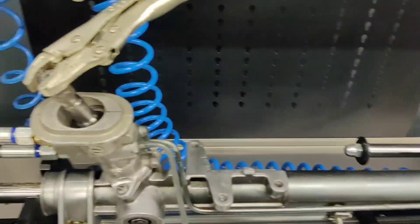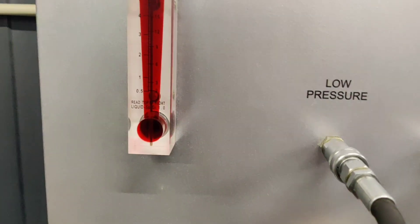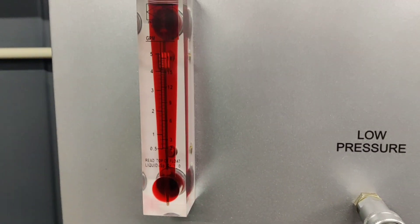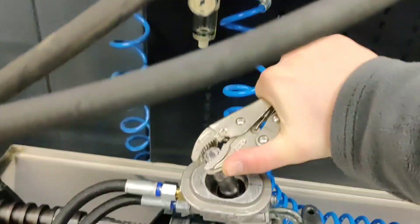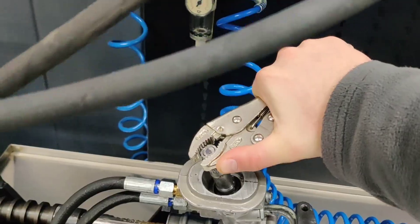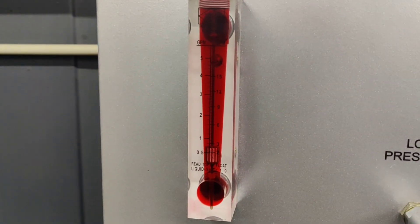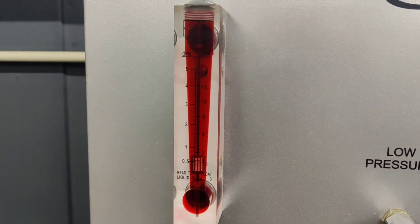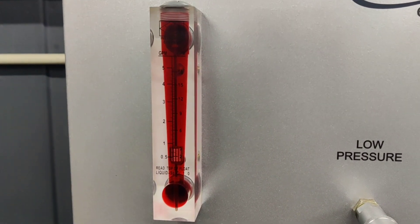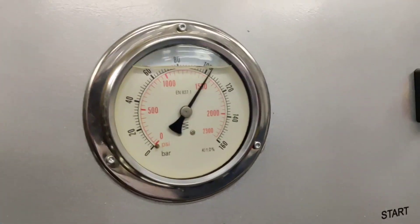And also, in the same way, I need to close the distributor. So I'm trying to close it, and the flow meter must show me zero, and the pressure will go up.